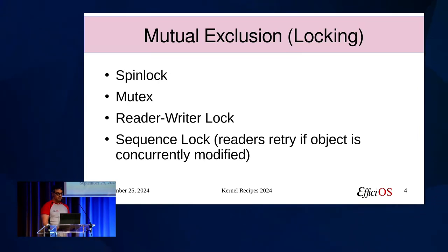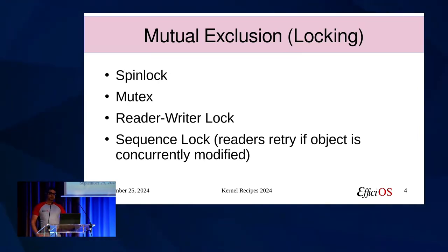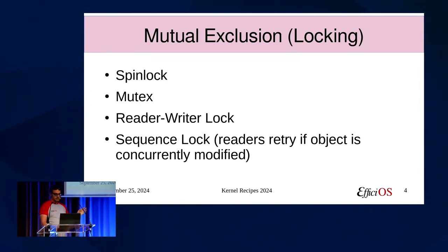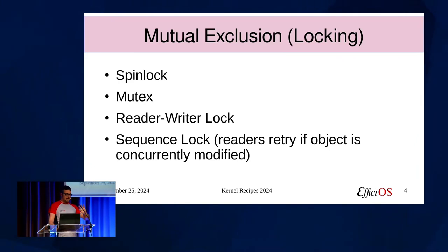A few words about mutual exclusion or locking. There are a few mechanisms — by no means a complete list. We can talk about spin locks, mutexes, reader-writer locks, or even sequence lock, which is a kind of weird type of locking where the readers retry if the object is concurrently modified.